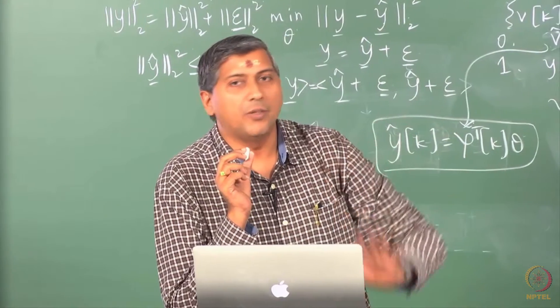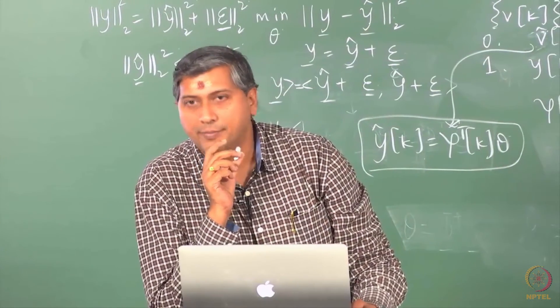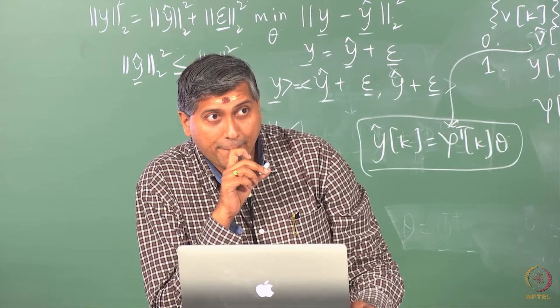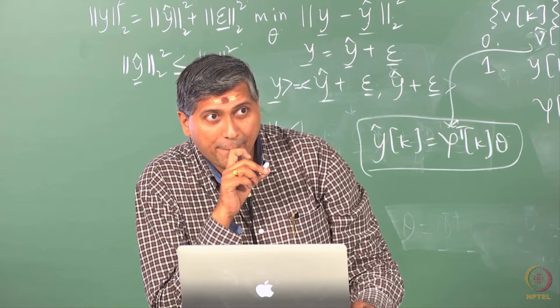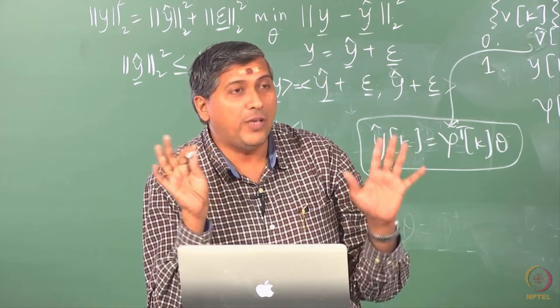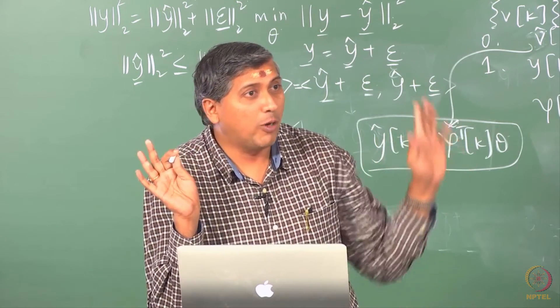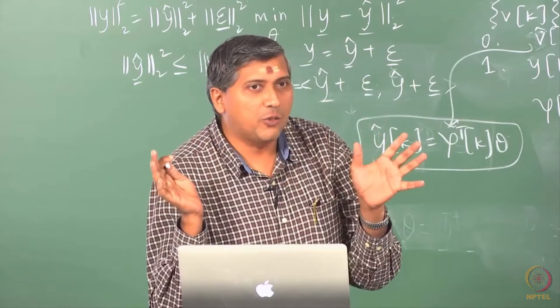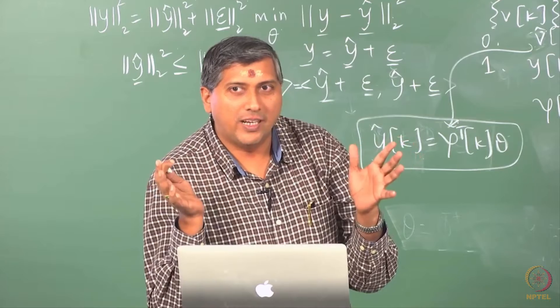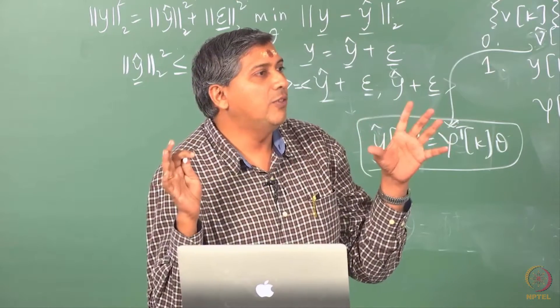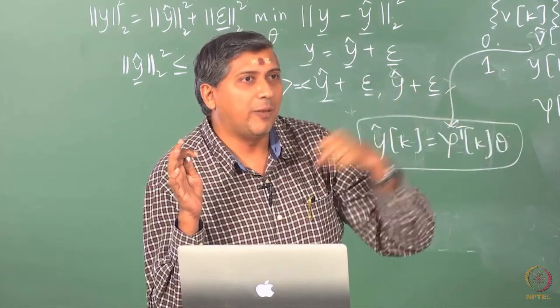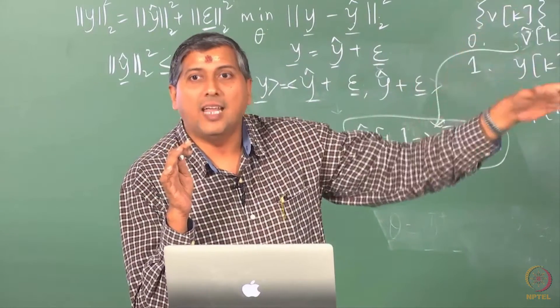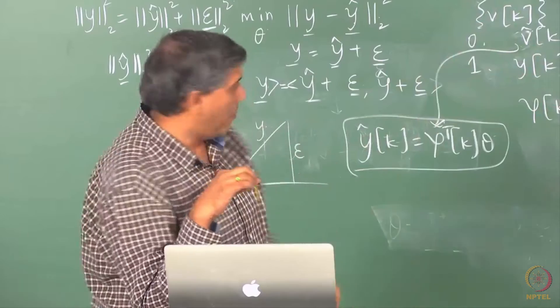But now comes a slightly tricky part when you are setting up the regressor matrix phi. Assume that I have N observations, how would your phi be? What is the size of phi in general N by P? What is P in this case? 2. 2. Good.